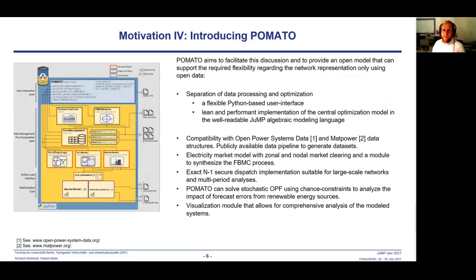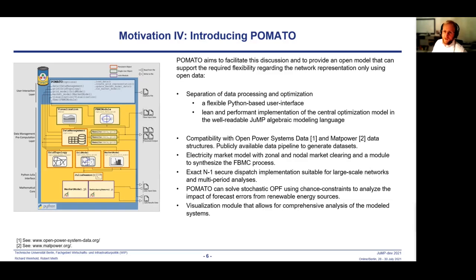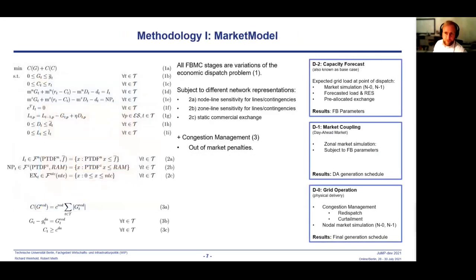This achieves a flexible Python-based user interface that is familiar to many users, while creating a lean and performant implementation of the central optimization model in the well-readable JuMP algebraic modeling language, as depicted in the figure on the left. For this talk, I want to focus on the Julia components, which provide the main functionality — the heavy lifting. Additionally, Pomato can solve stochastic OPF using chance constraints to analyze the impact of forecast errors from renewable energy sources, which is our current research.